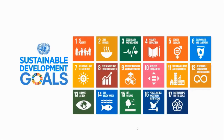The 17 Sustainable Development Goals are: no poverty, zero hunger, good health and well-being, quality education, gender equality, clean water and sanitation, affordable and clean energy, decent work and economic growth, industry innovation and infrastructure, reduced inequalities, sustainable cities and communities, responsible consumption and production, climate action, life below water, life on land, peace, justice and strong institutions, and partnerships for the goals.